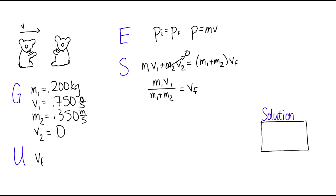Yay! So then we put in our numbers, 0.2 times 0.75 divided by 0.2 plus 0.35, and that's going to give us our final velocity.